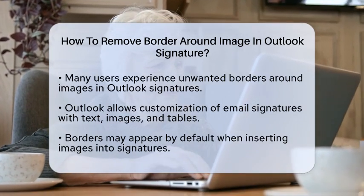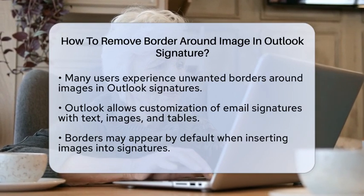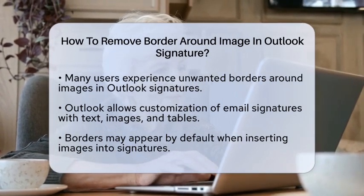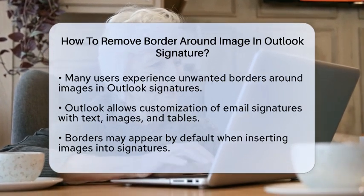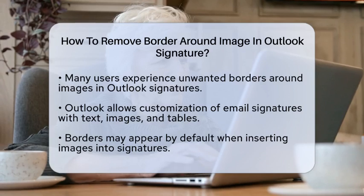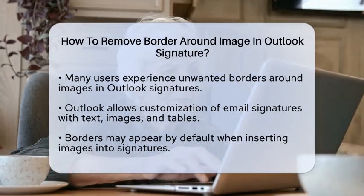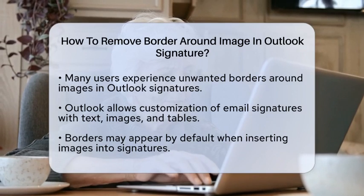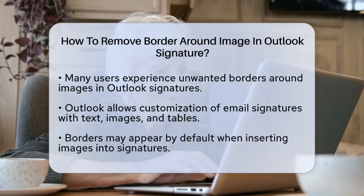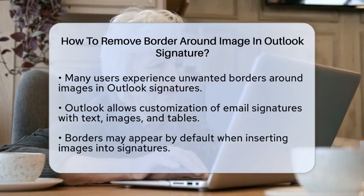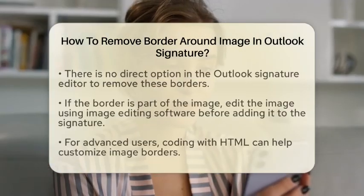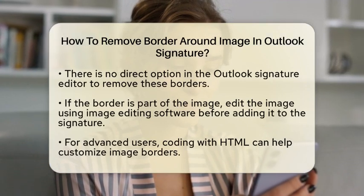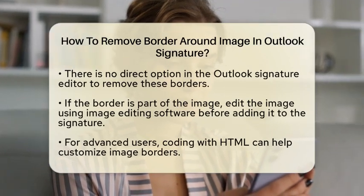First, it's important to know that Outlook allows you to customize your email signatures with text, images, and tables. However, when you insert images, borders may appear by default. Unfortunately, Outlook does not provide a direct option to remove these borders within its signature editor. But don't worry, there are ways to tackle this.